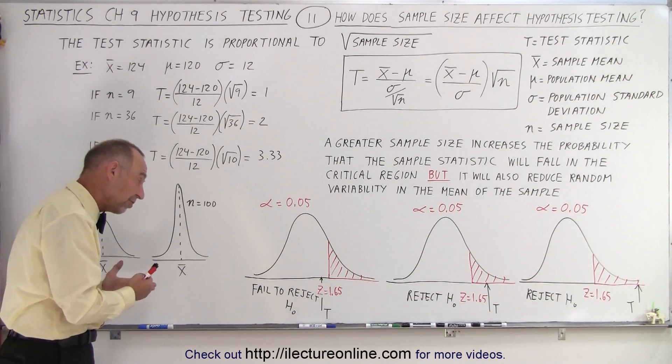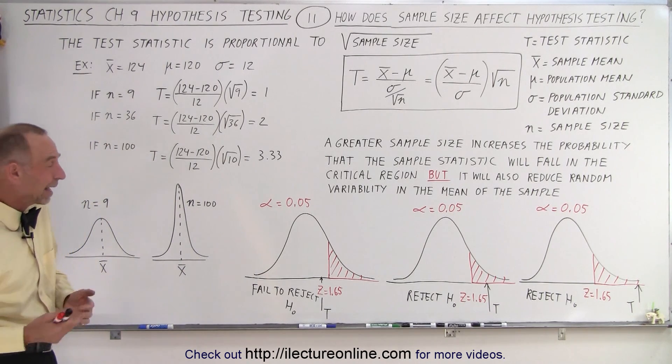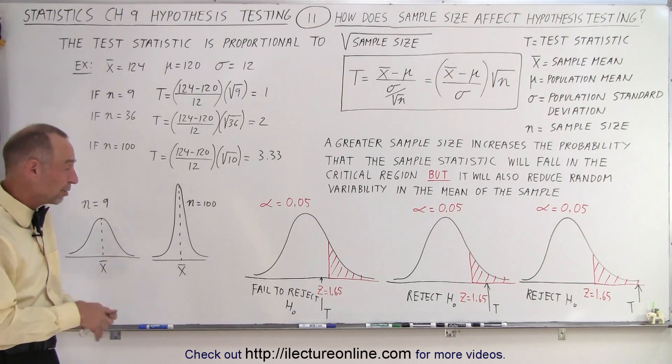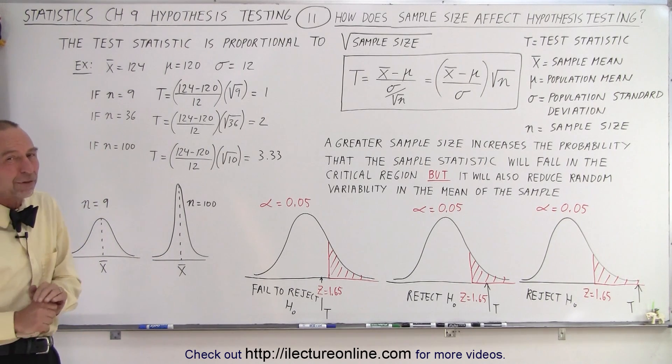If you have a small sample size and you fall in the critical region, you're not as likely to think of that as being the correct decision when you then end up rejecting the null hypothesis because it came from a small sample size.